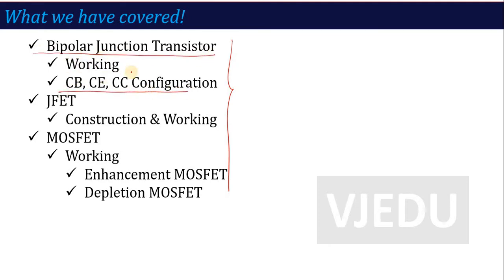We also covered the MOSFET part, i.e., the FET part, where we covered two parts: one is called JFET — construction, working, characteristics and parameters — and MOSFET, where we saw two types: Enhancement and Depletion. These are all very important topics and I hope you have come to understand them very well and will score full marks from this unit.